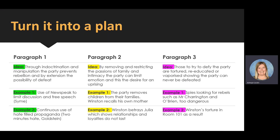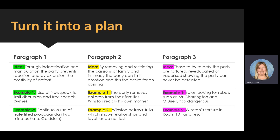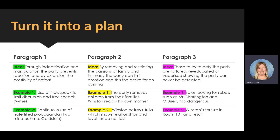Before I begin writing, I need to turn this into a plan. Your plan should have your topic sentence with no character names and then your examples. Unlike your in-class practices, you should try to include two examples if possible. For paragraph one, I'm going to write: 'Through indoctrination and manipulation, the party prevents rebellion and by extension the possibility of defeat.' I'm going to talk about Newspeak and how they limit discussion and free speech to get control of people, but also their use of hate-filled propaganda.